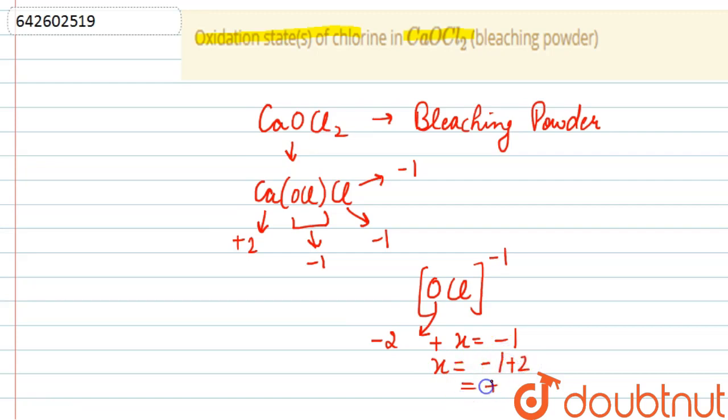So this means that in this compound, chlorine has two oxidation states: one is plus one and another one is minus one. So this was the answer.